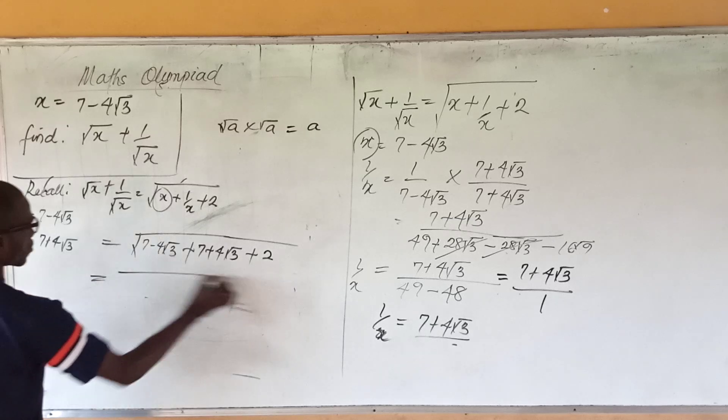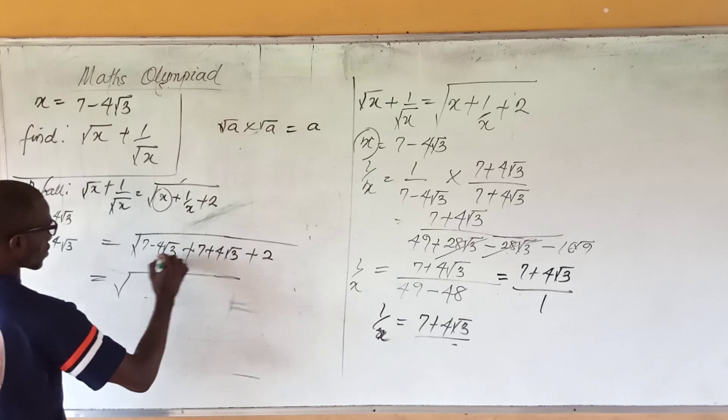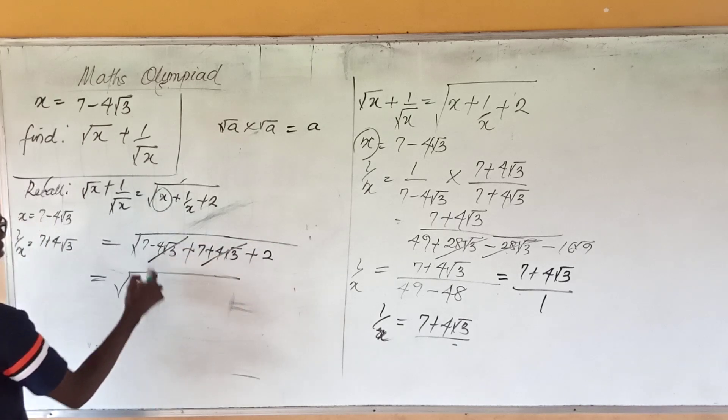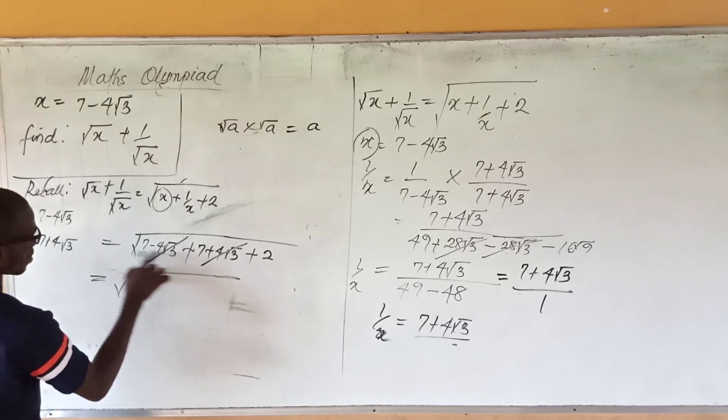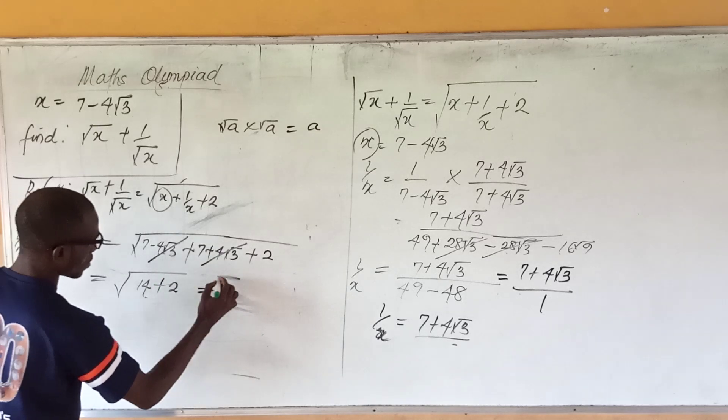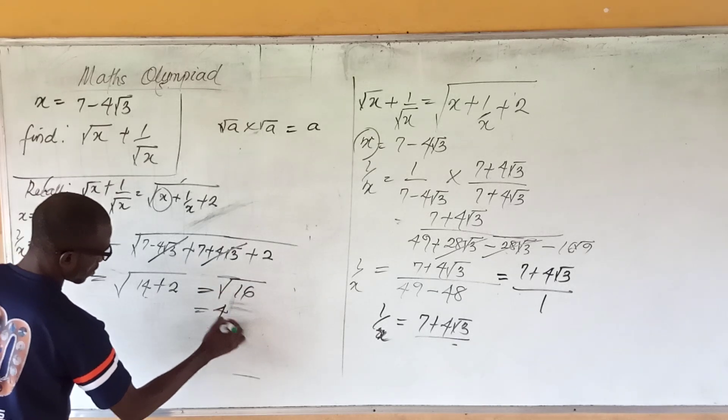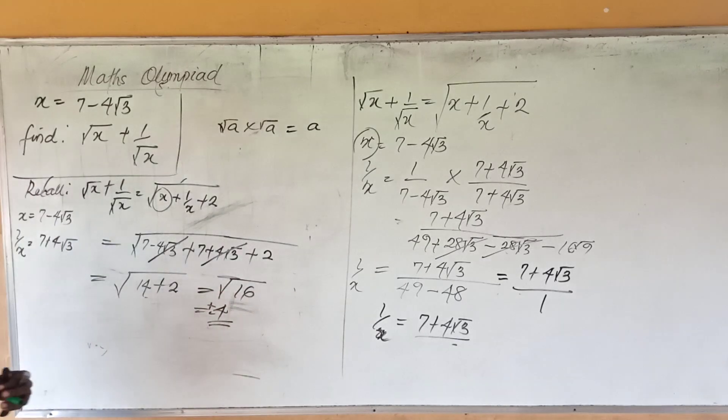So this becomes the square root of minus 4√3 plus 4√3 takes care of each other. This plus this gives me 14 plus 2, that is 16. So this becomes the square root of 16. And square root of 16 is plus or minus 4.